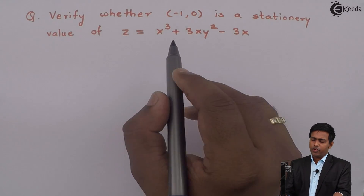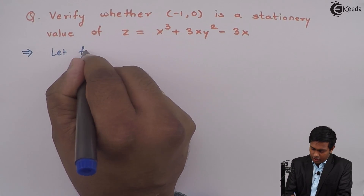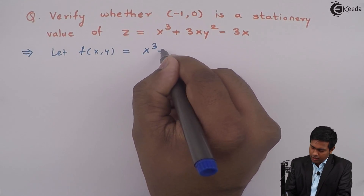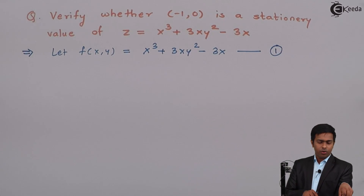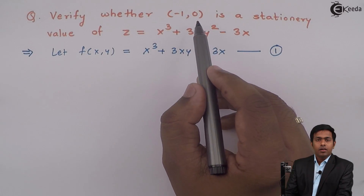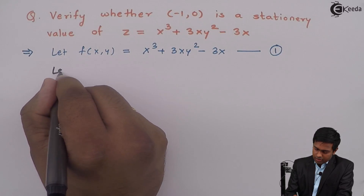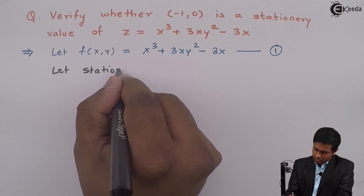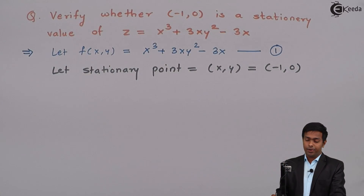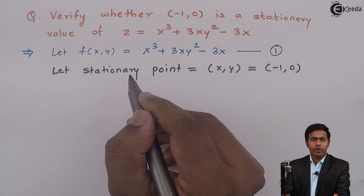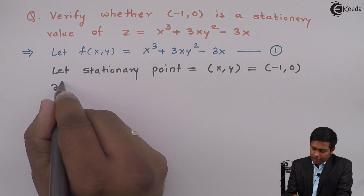Since this function is a function of x and y, I will say let f of x comma y equal to x cube plus 3xy square minus 3x — equation number 1. To check whether it is a stationary point or not, I will say the stationary point x comma y is equal to minus 1 comma 0. Now we will find out all the partial differentiations required, starting with ∂f/∂x.